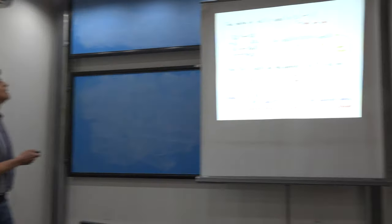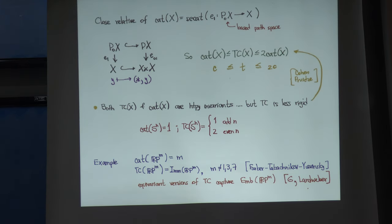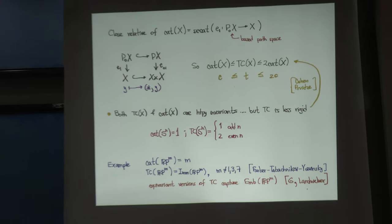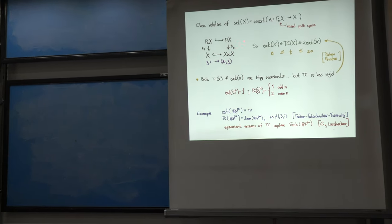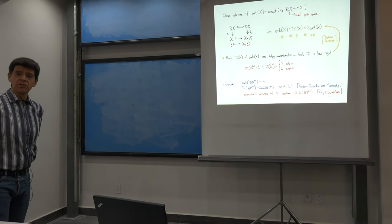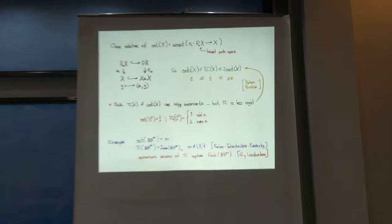The LS category of X is a close relative to topological complexity, and indeed it shares many properties and methods. For instance, if you pull back the double evaluation map under this section, you recover this fibration. So topological complexity is bounded from below by the LS category of X, and of course the sectional category of any fibration is bounded from above by the category of the Cartesian product, which is roughly two times the category of X.